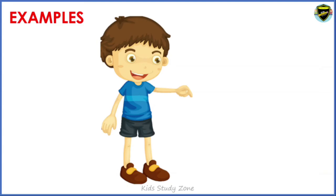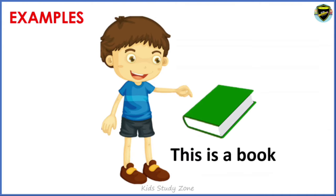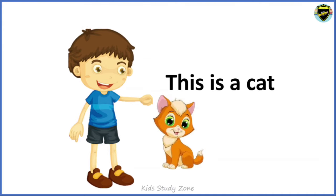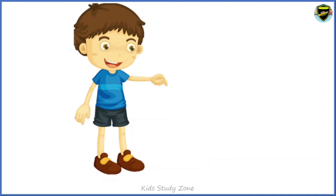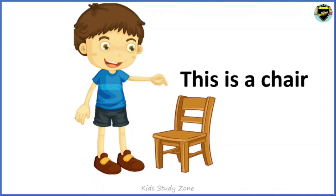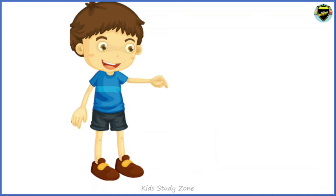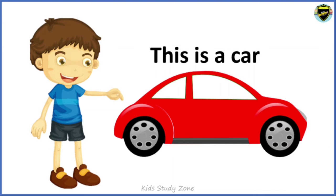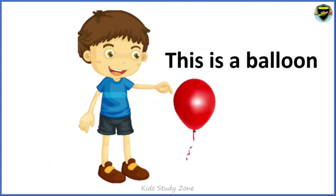Let us see some examples to understand this. This is a book. This is a ball. This is a cat. This is a chair. This is a pencil. This is a car.